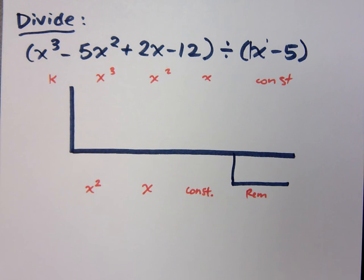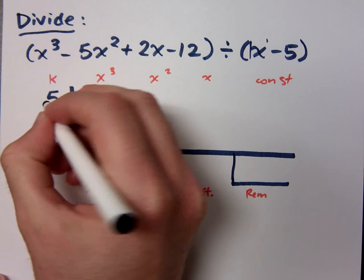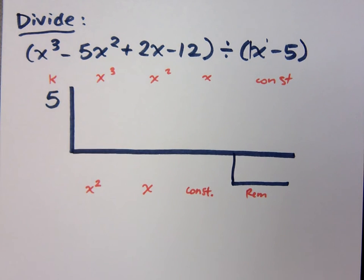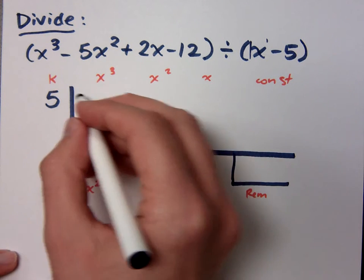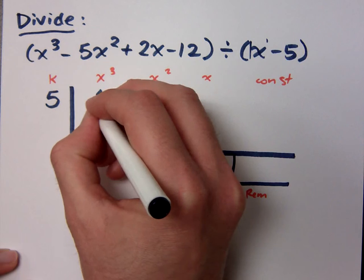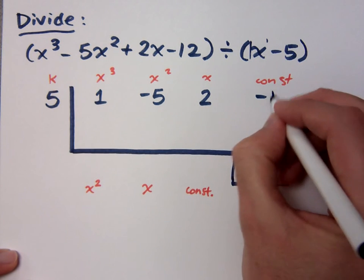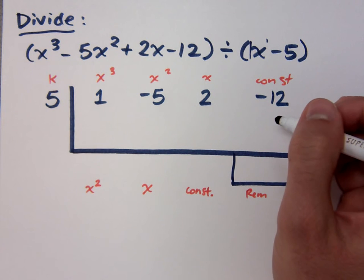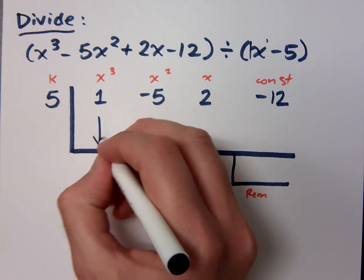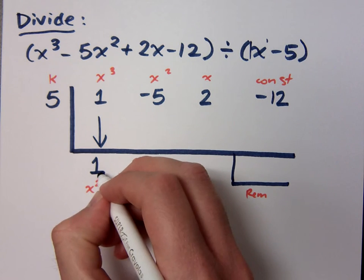Because now it's all about writing the coefficients down and then adding and multiplying. What's your k value? If you say negative 5, just trash the problem. You've already screwed up. What are your coefficients here? What goes up here? 1, negative 5, 2, and negative 12. What will I do first? 1 goes on the outside, so there's the 1. Then what?